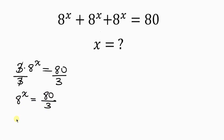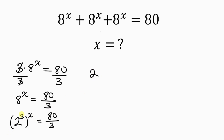Now 8 can be written as 2 to the 3, and it is raised to the x, so I'm going to be raising this to the x. This is equal to 80 over 3. Now from indices, this power and this power can multiply, so that we have 2 as the base, and 3 times x is 3x, and this is equal to 80 over 3.